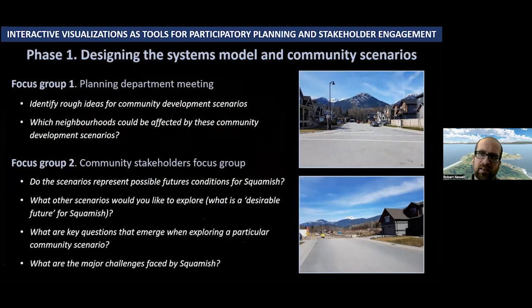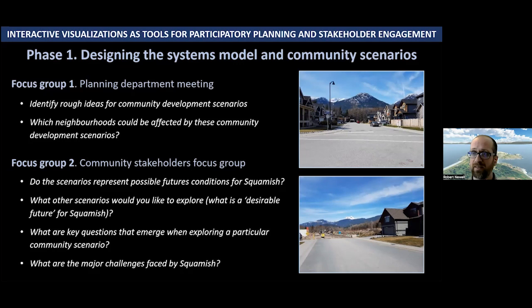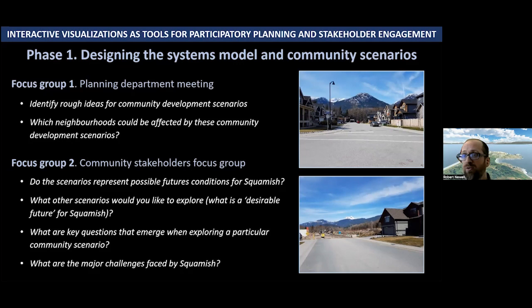Phase one involved two focus groups. The first was a scoping session engaging the District of Squamish planning department to get rough ideas of what community development scenarios could be — what would be realistically done there, what development paths and trajectories were already in the plans, and which neighborhoods would be useful to apply scenarios to. The broader second focus group fleshed out the elements of the systems model and community scenarios, involving folks from community associations, NGOs, local government, and the private sector including the development community.